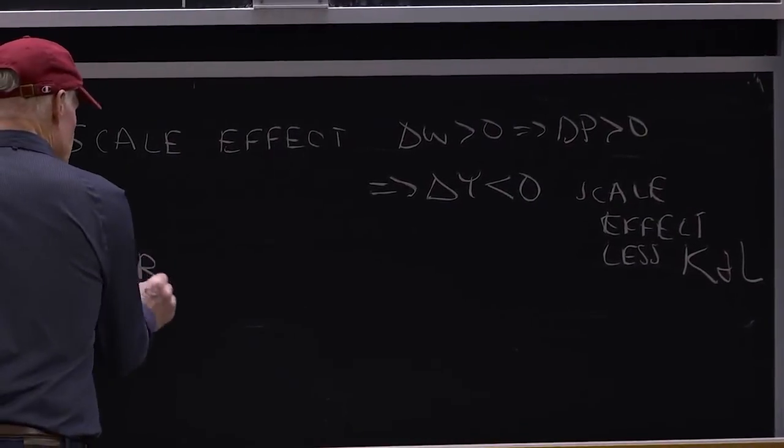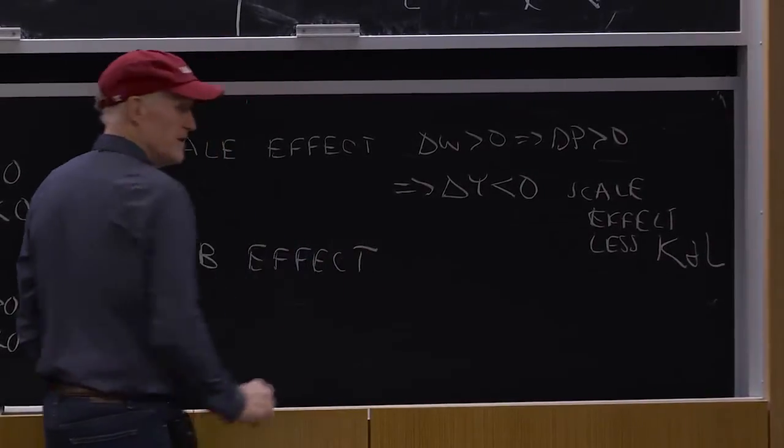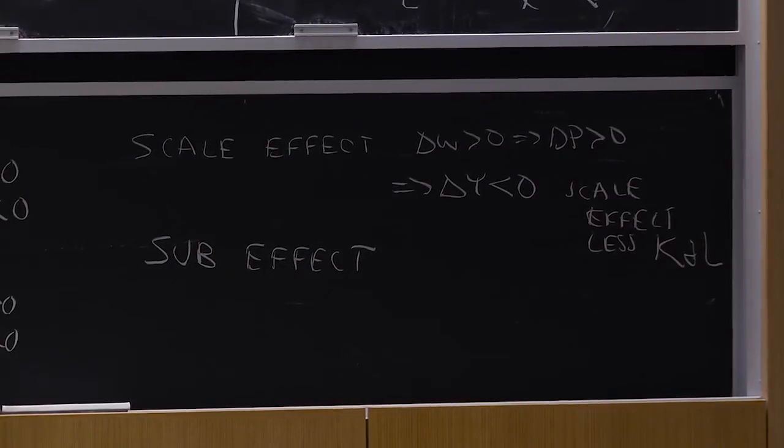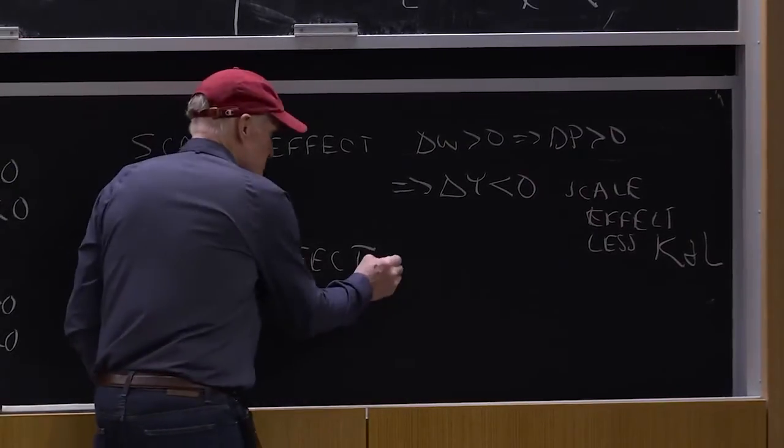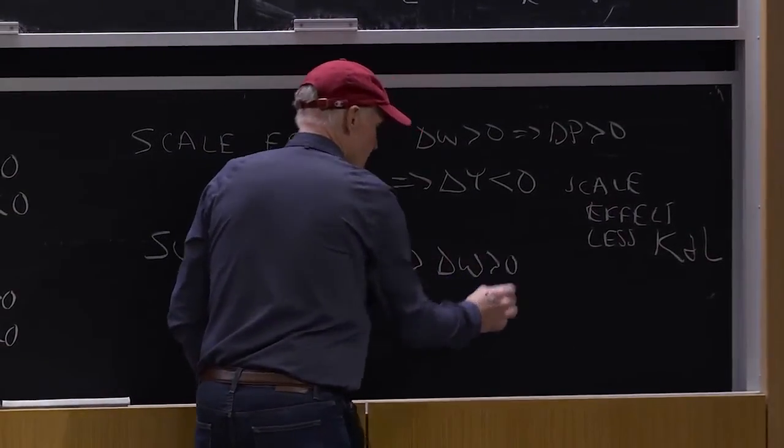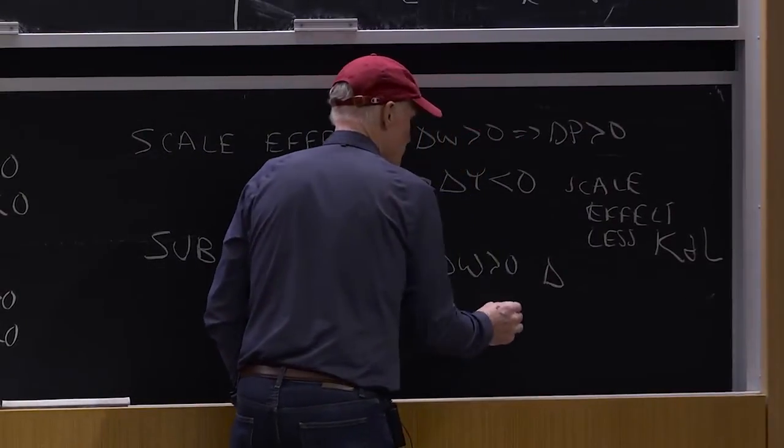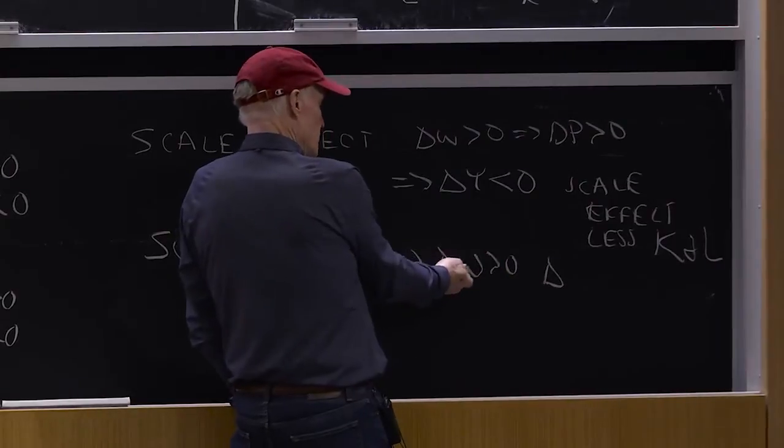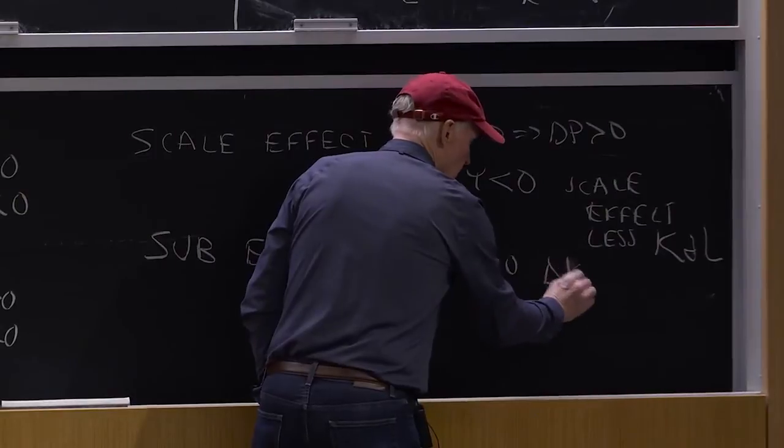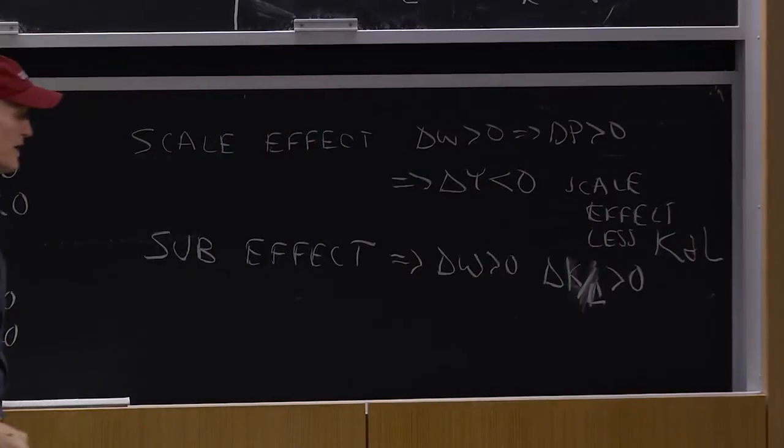Now, it doesn't take a whole lot of genius to guess which way the substitution effect goes. It tends to make them what? Complements or substitutes? Not too hard. Substitutes. What is it? Delta W goes up, which implies delta... remember, delta R is zero, delta W rising, delta L, delta K over L, delta K over L is positive. We're going to substitute toward capital.